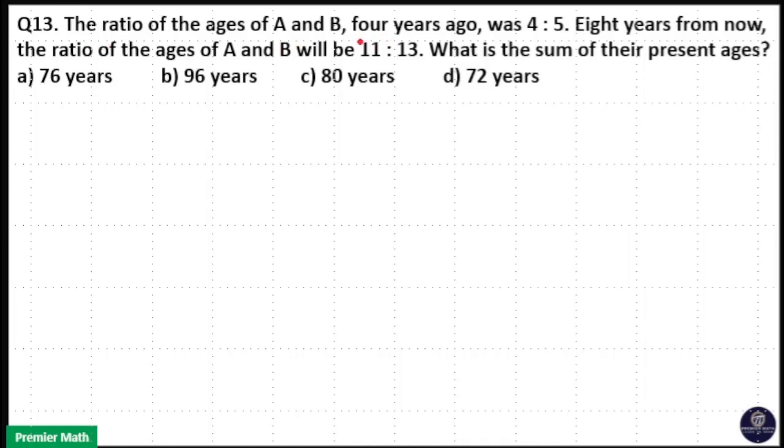The ratio of ages of A and B four years ago was 4 is to 5. Eight years from now, the ratio of ages of A and B will be 11 is to 13. What is the sum of their present ages?